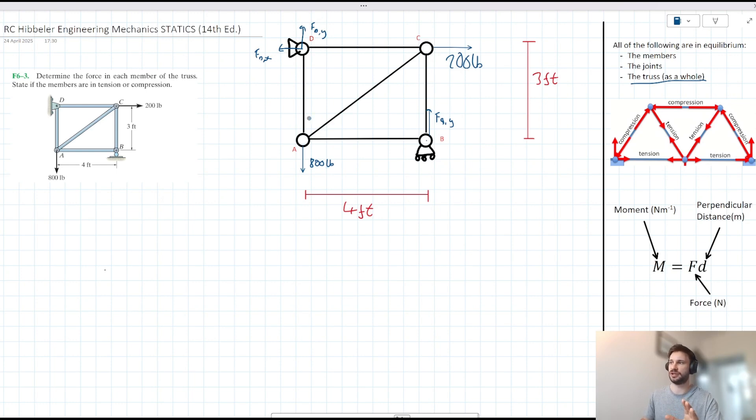Before we get into considering the internal forces going on in our truss here, let's consider the truss as a whole first. There are things that we can already say here. We can already say that FD-X is equal to 200 pounds. The reason we can already say that is because FD-X is the only force here that can counter this 200 pound force. So we can already say that. We can also say in the vertical we have 800 pounds acting down at joint A. And that is equal to the sum of FD-Y and FB-Y. Now this isn't solvable since we have two unknowns here.